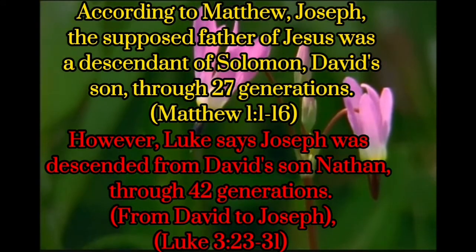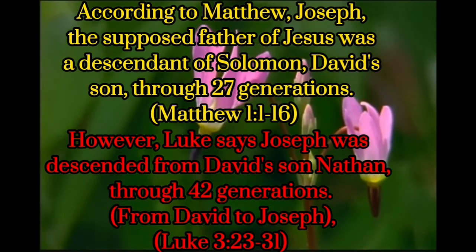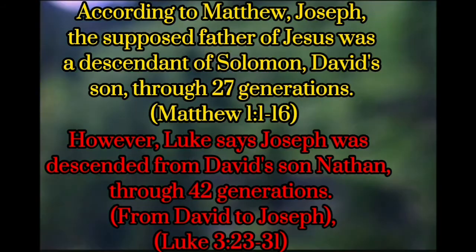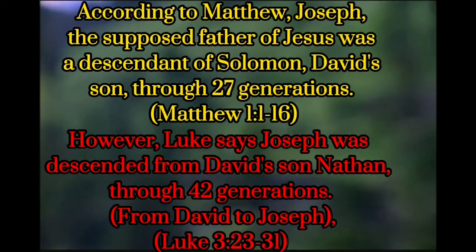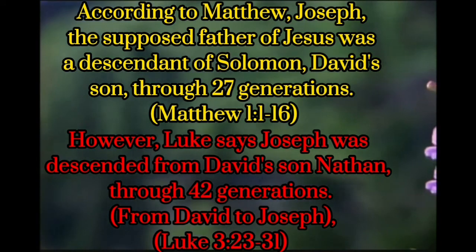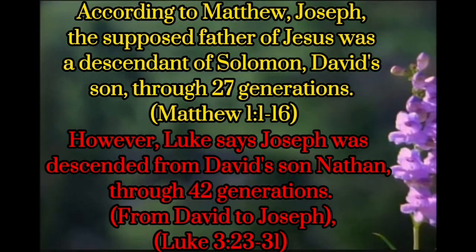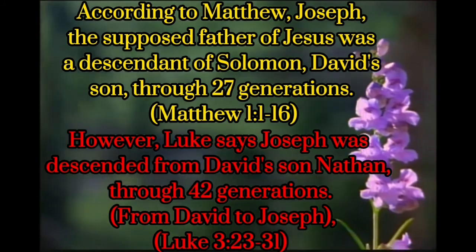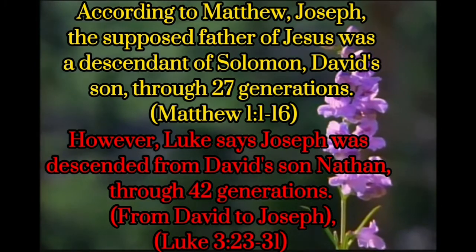However, Luke says Joseph was descended from David's son Nathan, through 42 generations from David to Joseph. Luke chapter 3, verses 23 to 31.